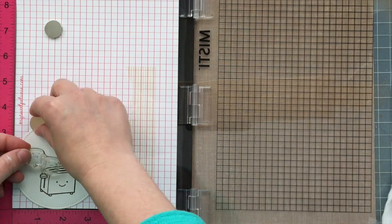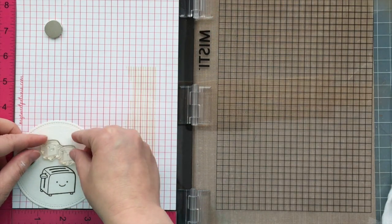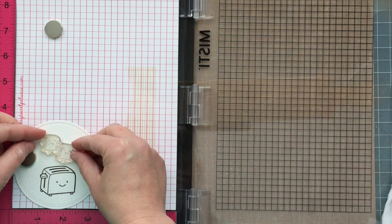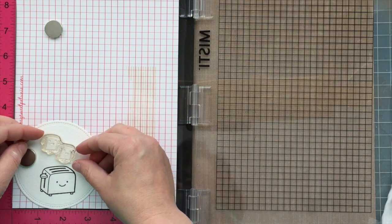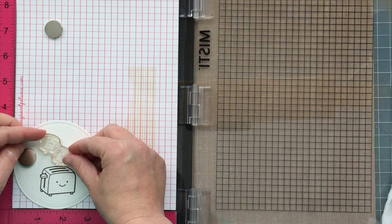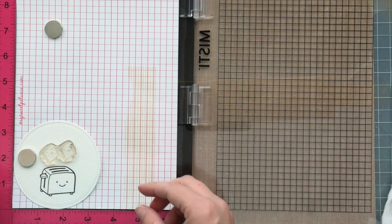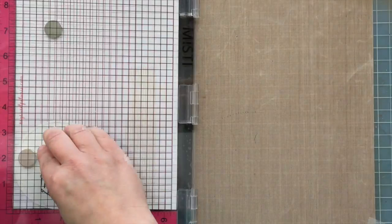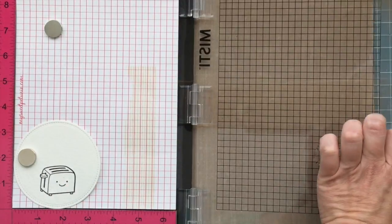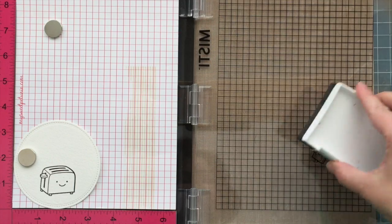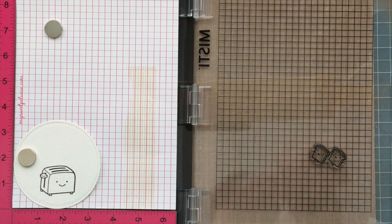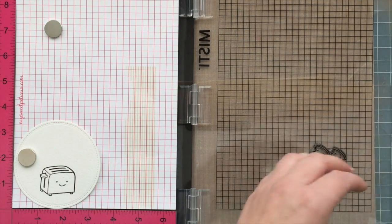So now I've stamped the toaster. Now I'm going to stamp the little toast. I'm trying to figure out how I want it to be popping up out of the toaster there. Again I've got that lined up where I want it. I just press down the little hinged door, pick it up, ink up my image, and then stamp. It's just that easy. I am really enjoying this product.